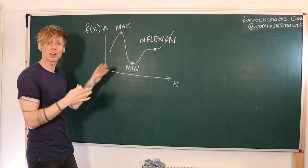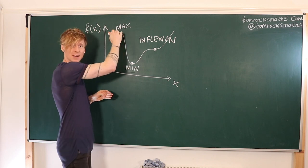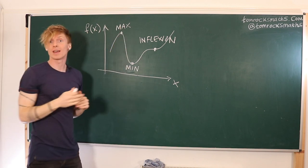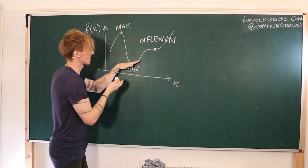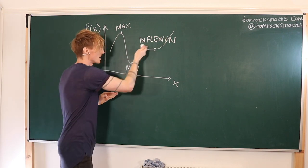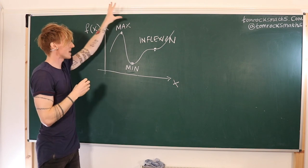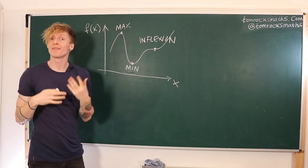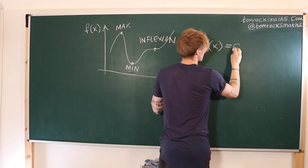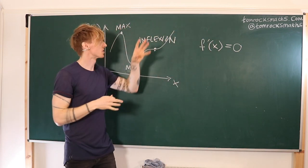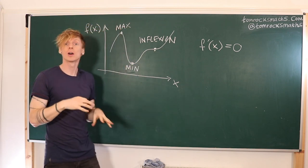The gradient of our curve goes flat at the critical point. Here the gradient is positive, it goes through zero to a flat gradient, and then the gradient becomes negative. Here there's a change from negative gradient through zero as it goes flat and then starts to increase. And here the gradient continues to increase but it does pass through zero at the inflection point. So the way to find critical points for a function of one variable is simply to solve f prime of x, or df/dx, equal to zero.